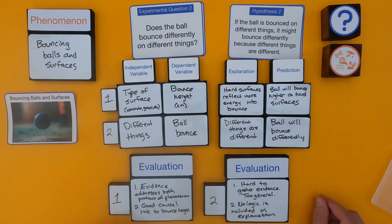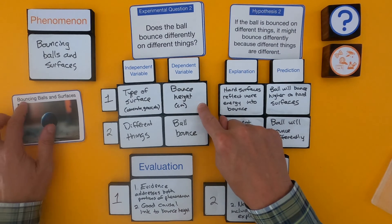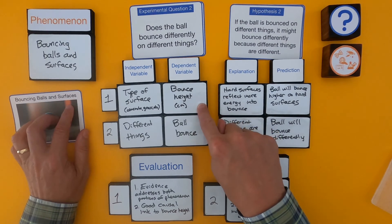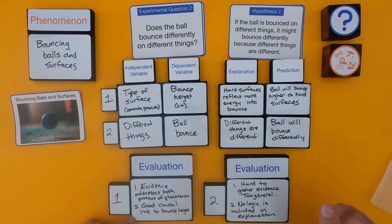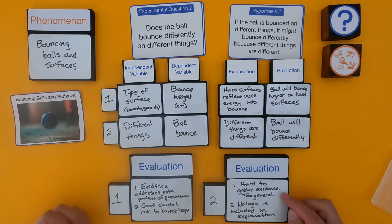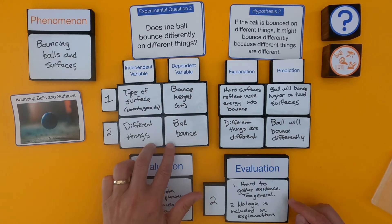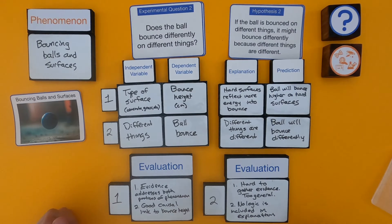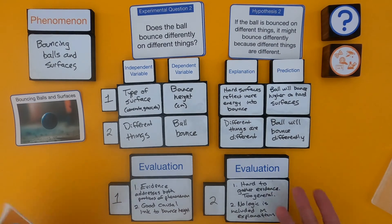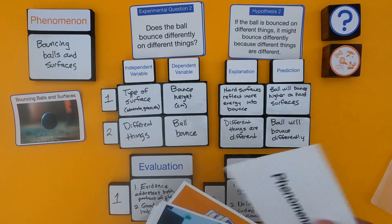My evaluation is that student one has good evidence — it addresses both portions, bouncing balls and surfaces from the phenomena — and they've got a nice causal link to bounce height in their explanation using energy. As I look at question and hypothesis two, it's hard to gather evidence, it seems too general, and there's circular logic in their explanation. If you give students feedback like that, they could improve their questions, and that's going to improve their investigation.